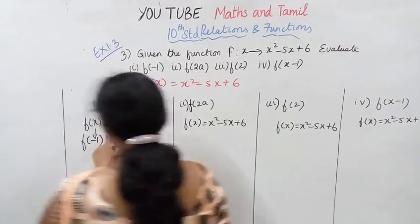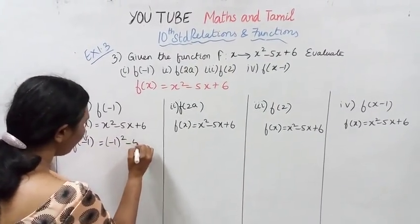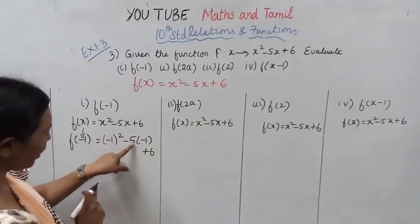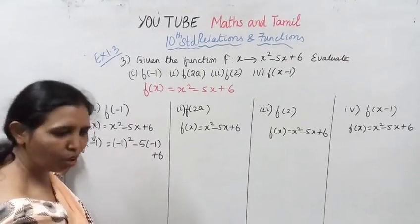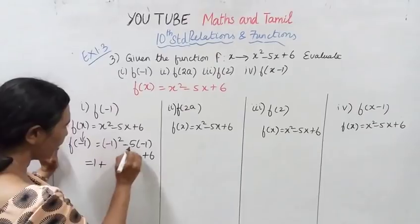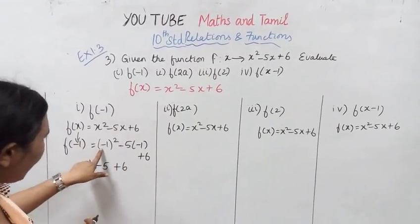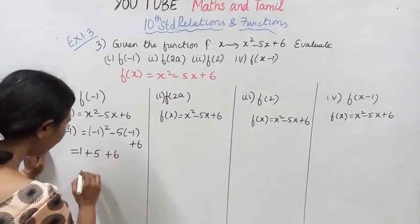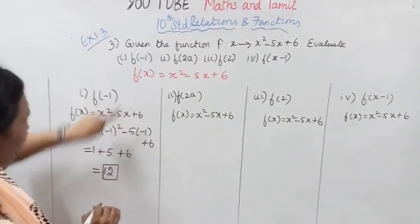For f of minus 1, substitute x equals minus 1 into the function: minus 1 the whole square minus 5 into minus 1 plus 6. Minus 1 into minus 1 gives plus 1. Minus into minus gives plus 5 into 1, that is 5. So 1 plus 5 plus 6 equals 12. The answer for f of minus 1 is 12.